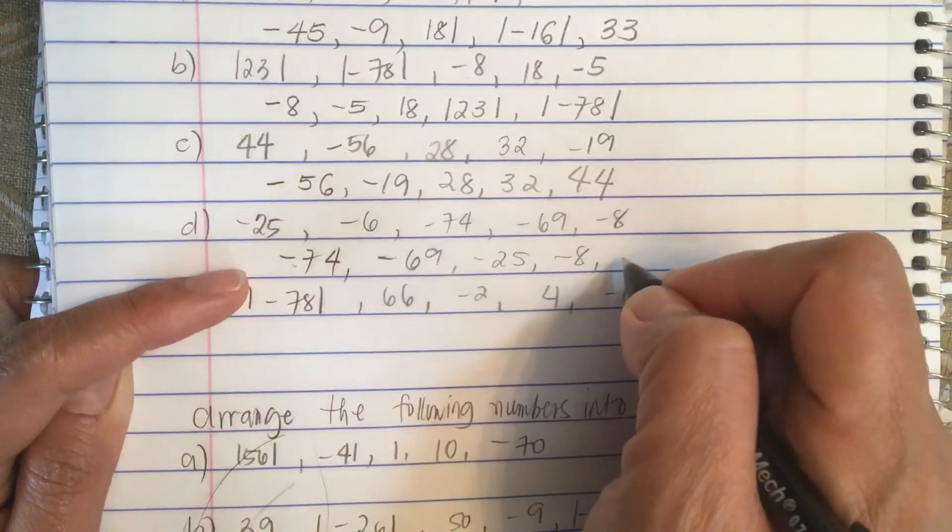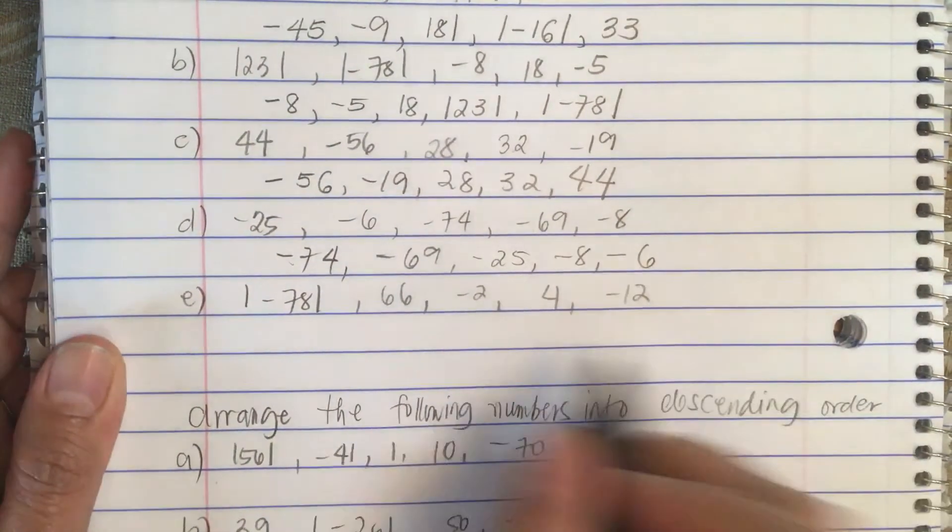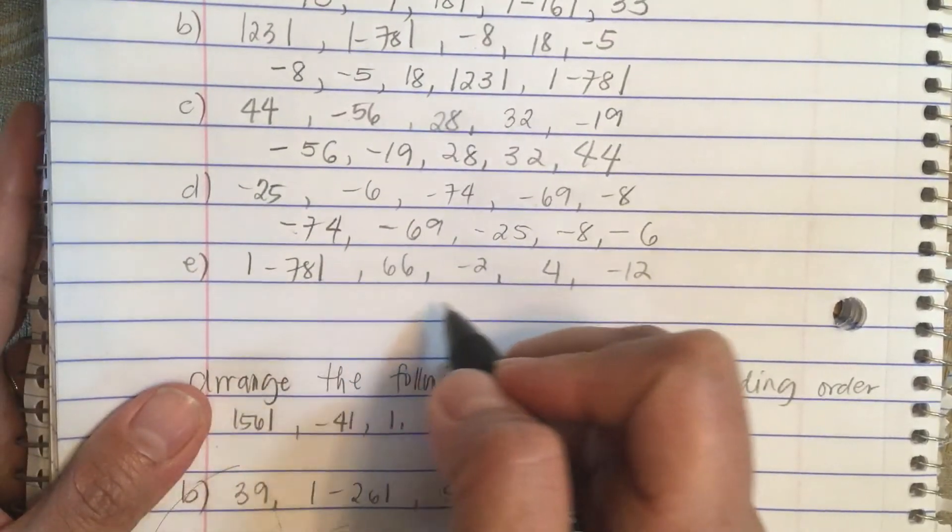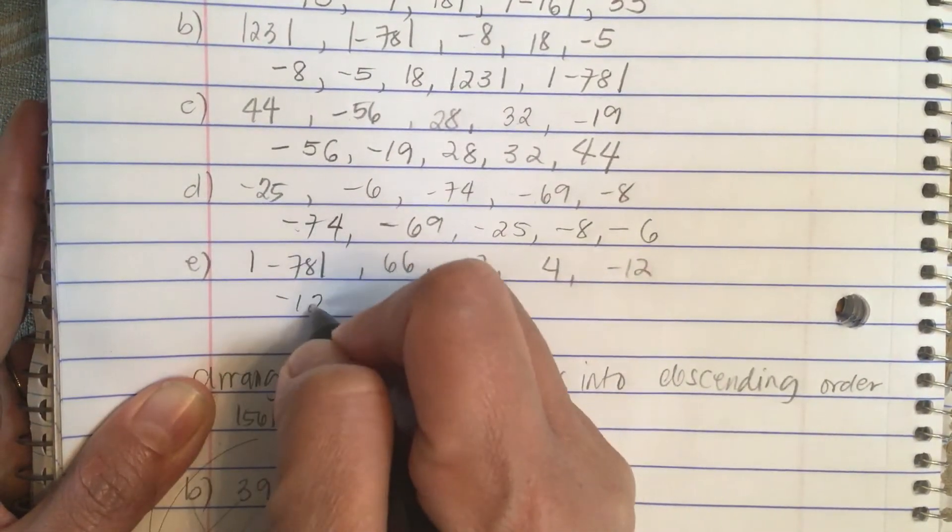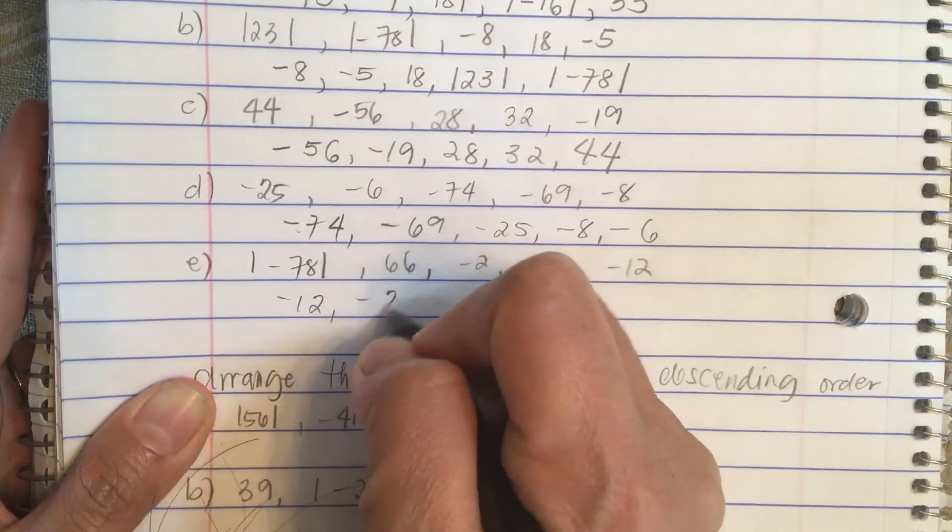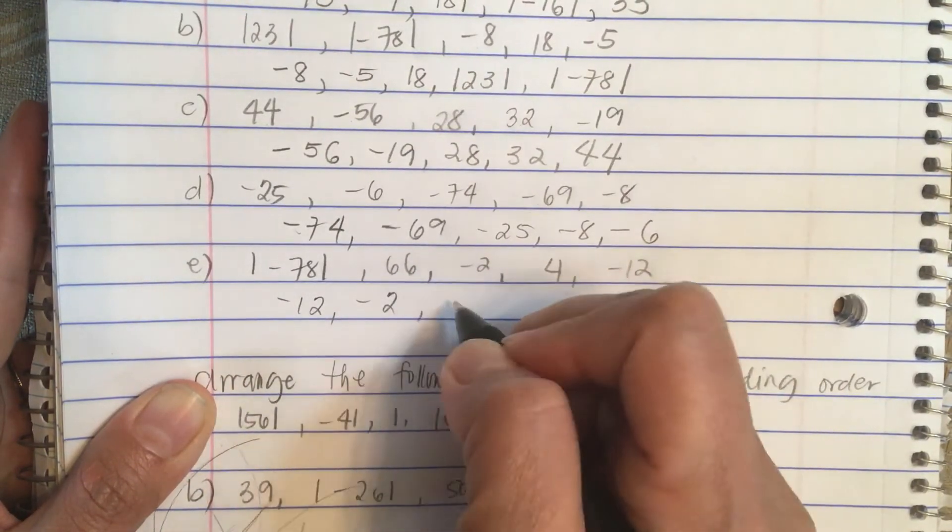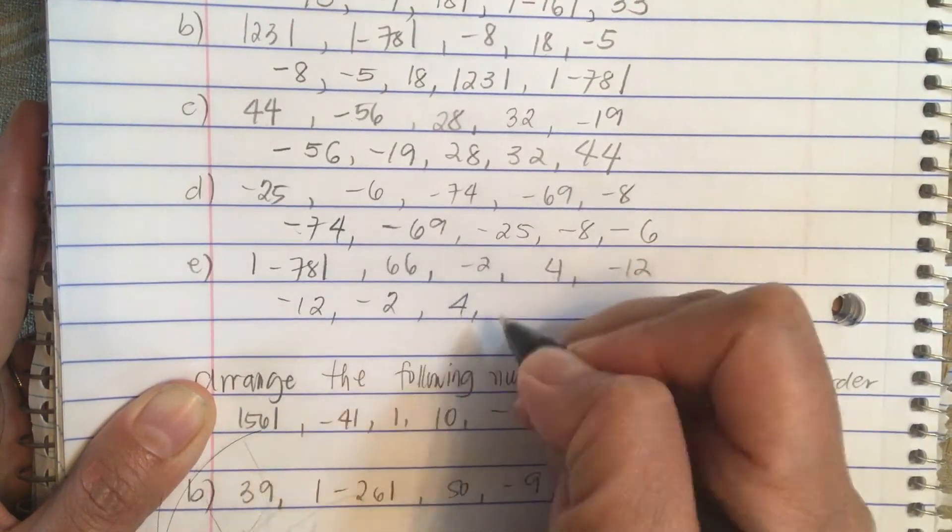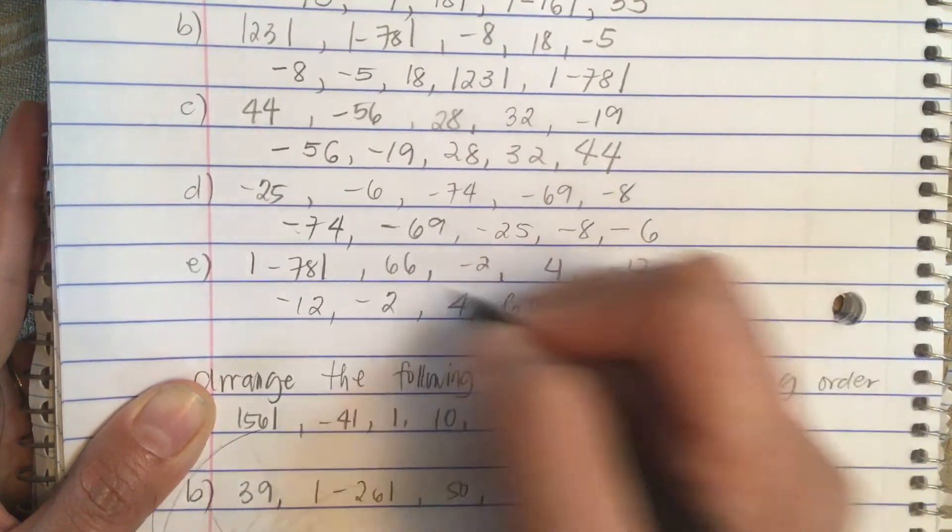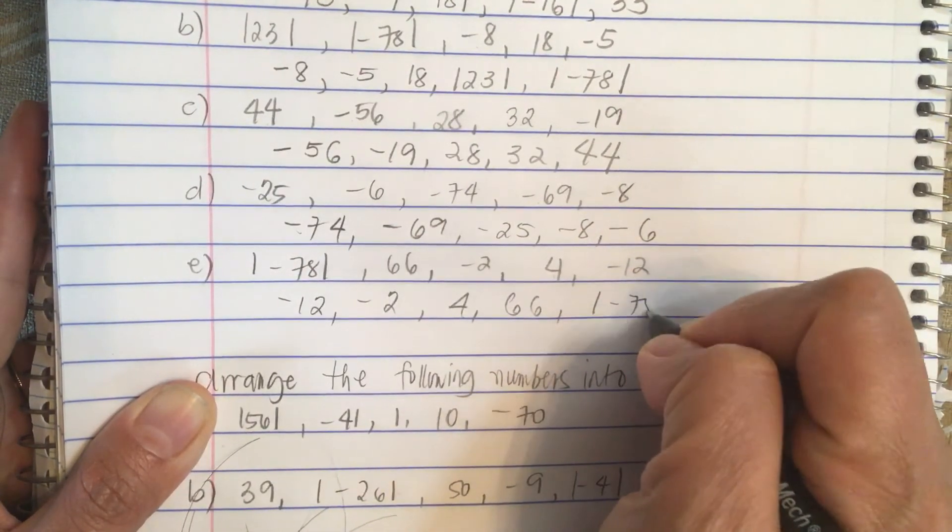Now this one, we have a minus 12, minus 2, and then a 4, and then 66, and then the absolute value of 78.